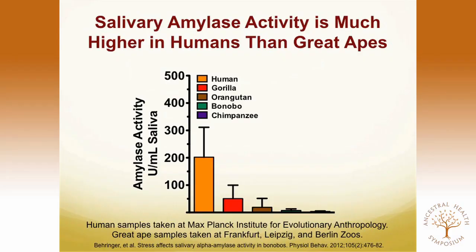If we look at salivary amylase among great apes, we see a very similar pattern. This graph shows not the gene duplications but the activity of the enzyme in the saliva. We can see that humans have far greater salivary amylase activity compared to any of the other great apes measured — gorillas, orangutans, bonobos, and chimpanzees. The question arises: what does this do, and why would this adaptation be useful?